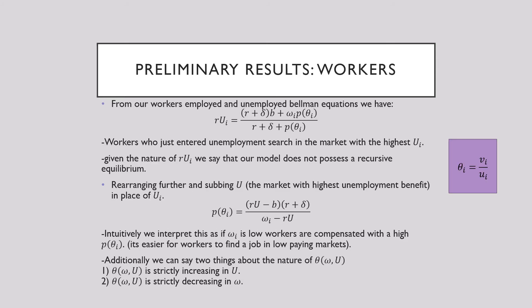In terms of some preliminary results for our workers story, we have our workers unemployed and employed bellman equations and we get the following result here. This just means that workers who entered unemployment search in the market with the highest U_i. Given the nature of rU_i, we say that our model does not possess a recursive equilibrium. This just means in terms of computing this thing, we'll have to rely on some different tricks. Rearranging further and subbing in U without a subscript, this is the market's highest unemployment benefit in the place of U_i, we get the following result.